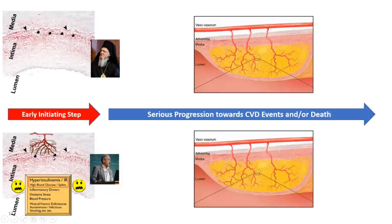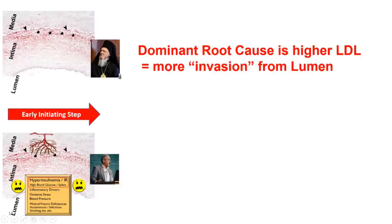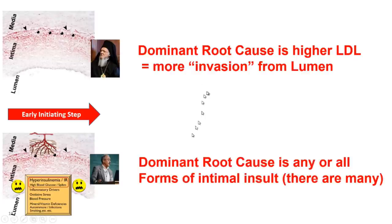Here's the important distinction between the two hypotheses. For the orthodox hypothesis, the dominant root cause is higher LDL particle numbers causing more invasion from the lumen. Whereas in Subotin's hypothesis, it's all about the intimal insult — which is not LDL. It's hyperinsulinemia, oxidative stress, many kinds of diseases causing vasculitis, smoking — all the real root causes of heart disease. This is a big difference.